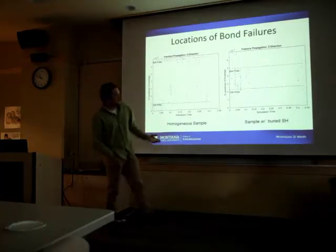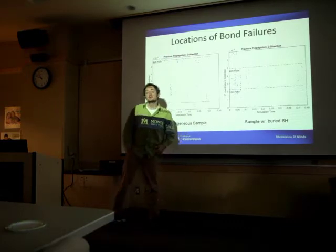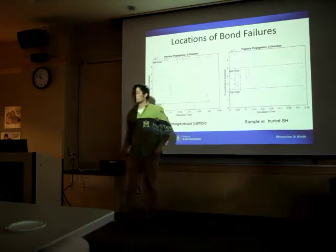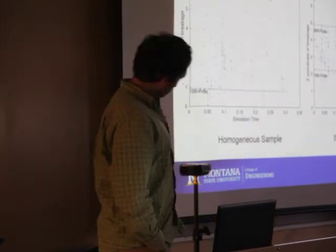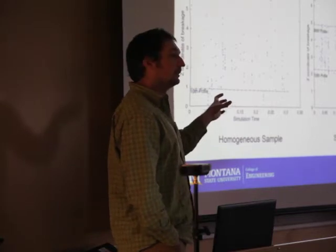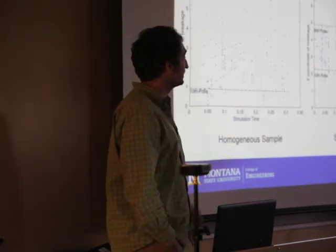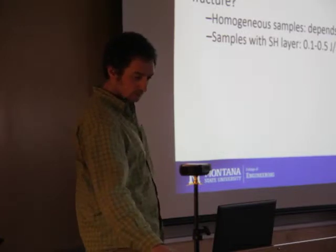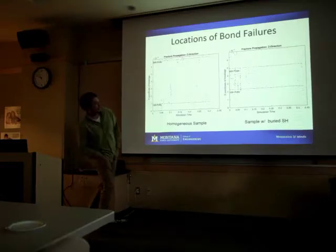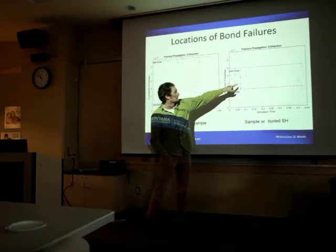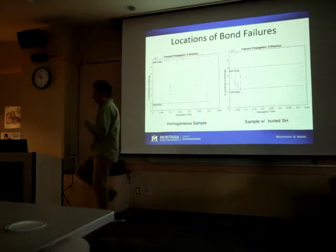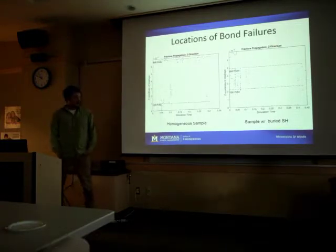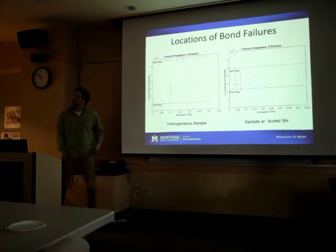The graph on the right shows the same concept but from a sample with a buried surface hoar layer. This sample is about seven millimeters tall, and almost all the bonds are breaking right in the middle where that surface hoar layer is. We're concluding that when there is a weak layer in the snowpack, it gives the sample a place to direct the fracture - a clearer fracture path. And the bonds in that weak layer are breaking very quickly, right at the very start of loading, with a sharper load ramp-up and drop-off on the stress-strain plot compared to homogeneous samples.